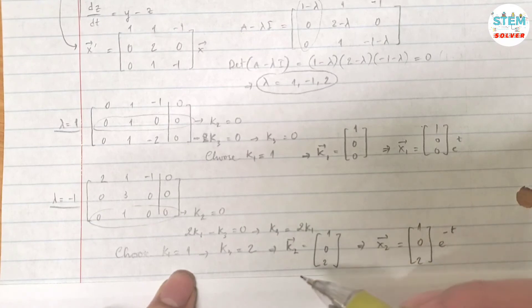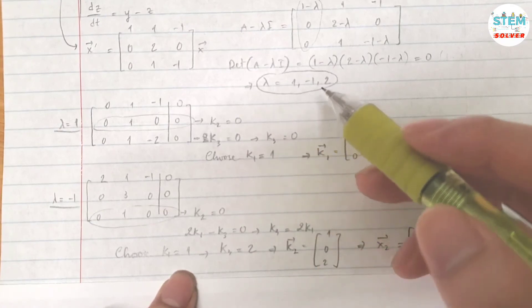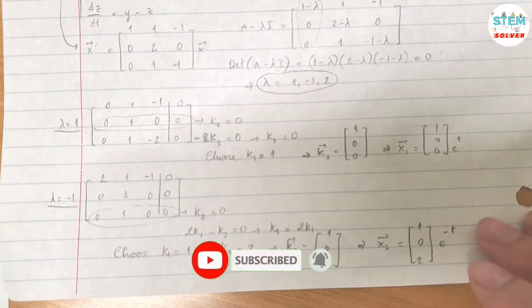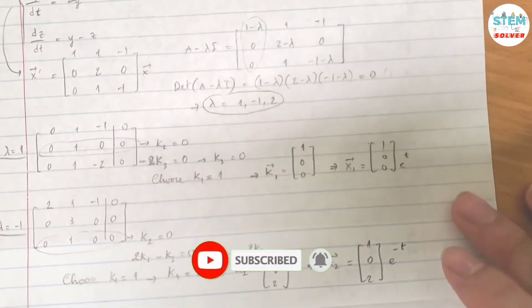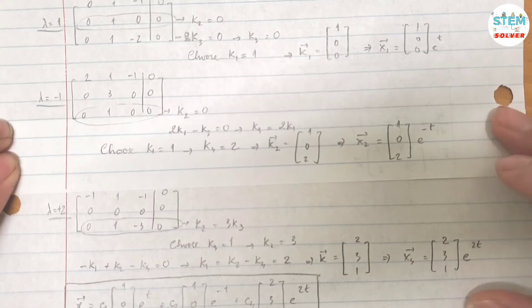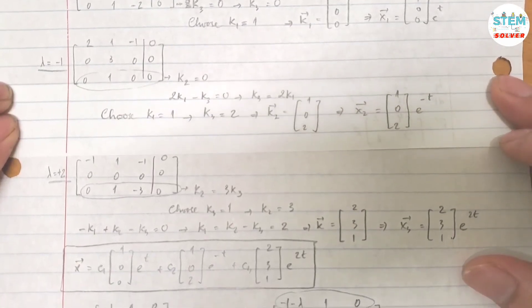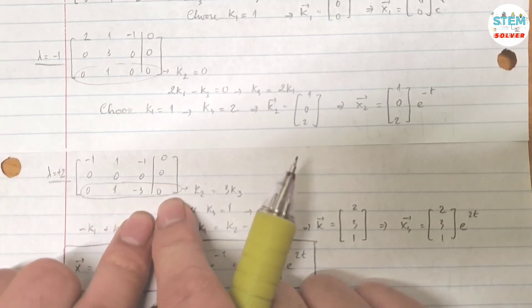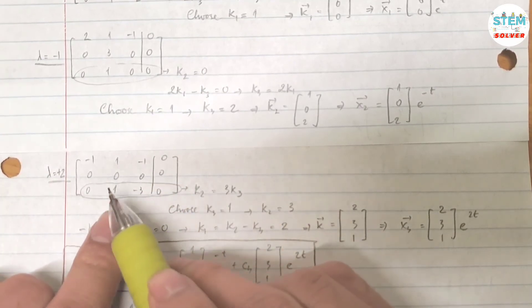You are going to repeat this process one more time for lambda equals 2. Plug it into here, that will give you this. So here is your matrix augmented with 0.